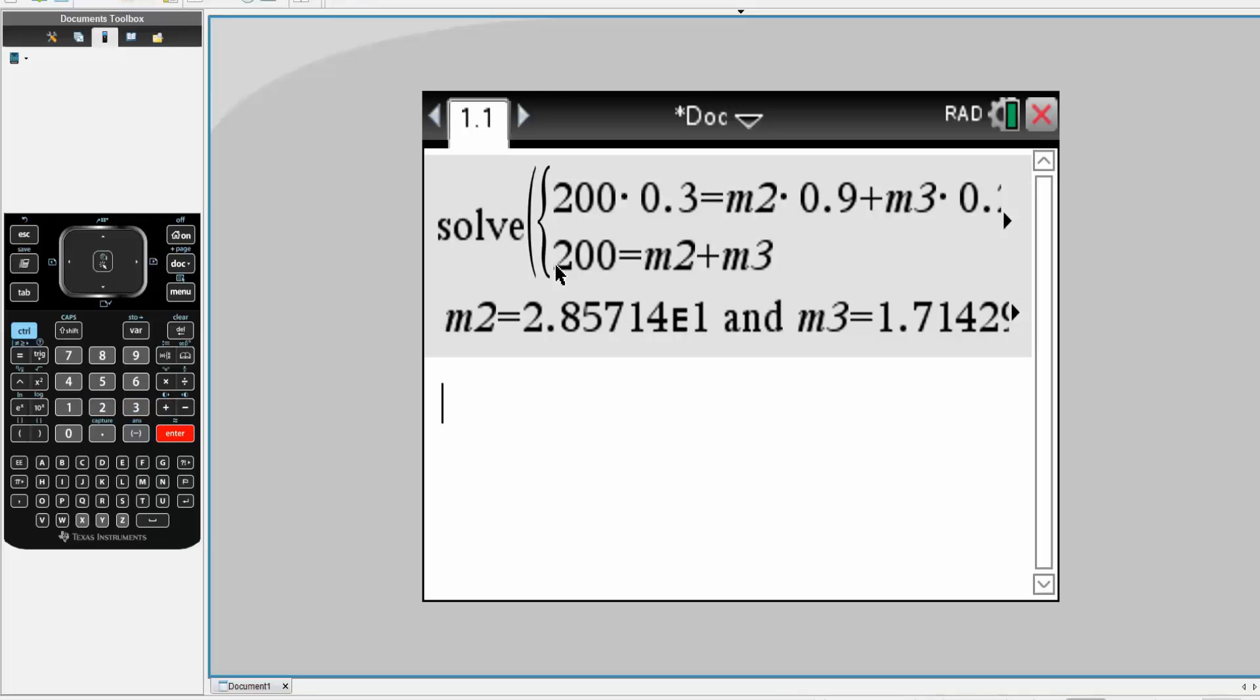Second equation was just 200 is equal to M2 plus M3. You hit enter, and the answer would be M3 would be 171.43 and M2 would be 28.57.